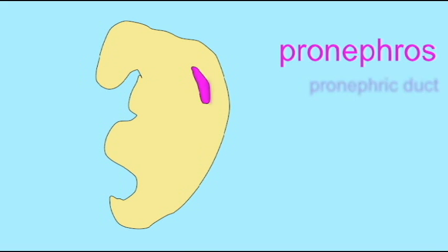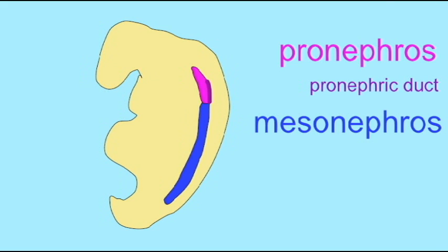In fish, these form thin, long organs which stretch much of the length of the body.